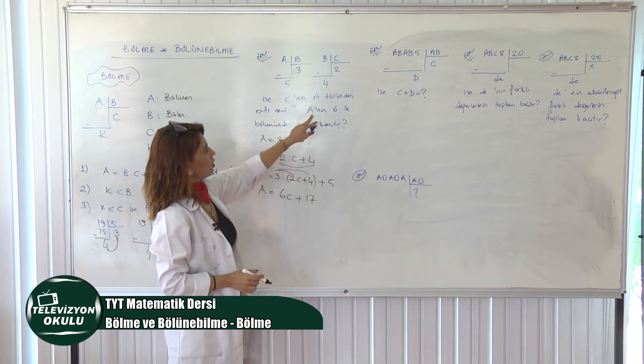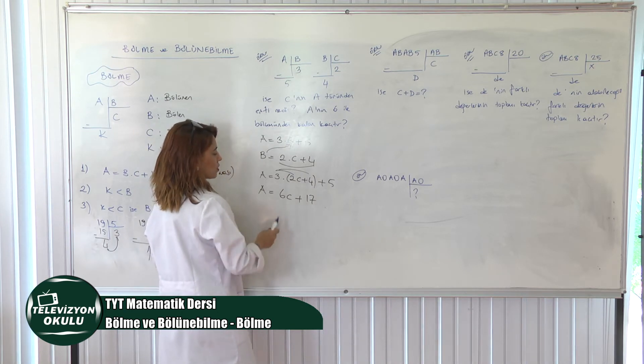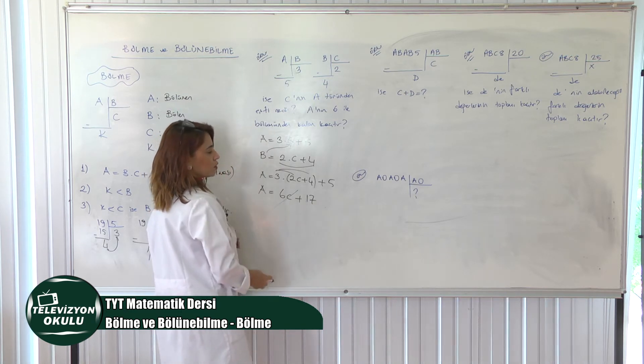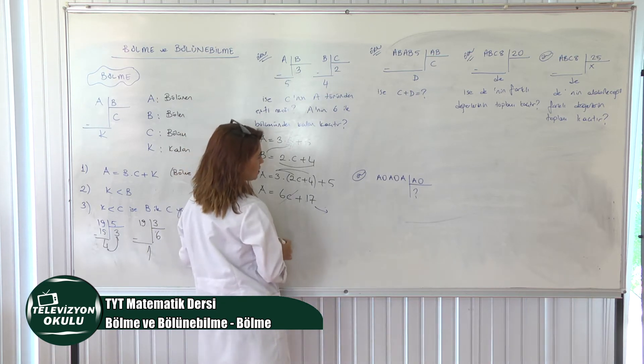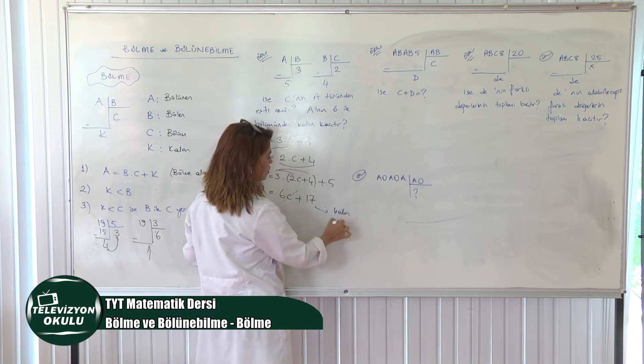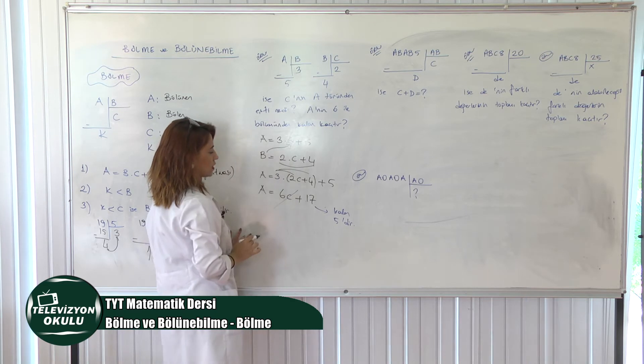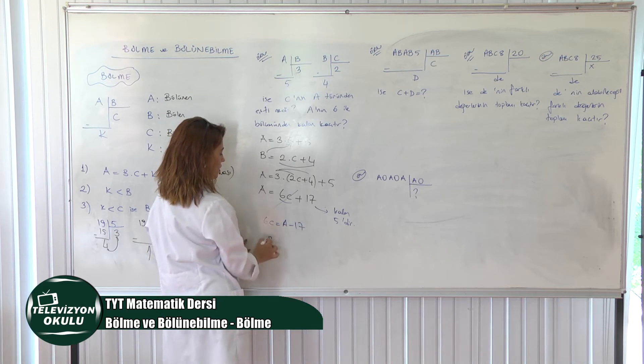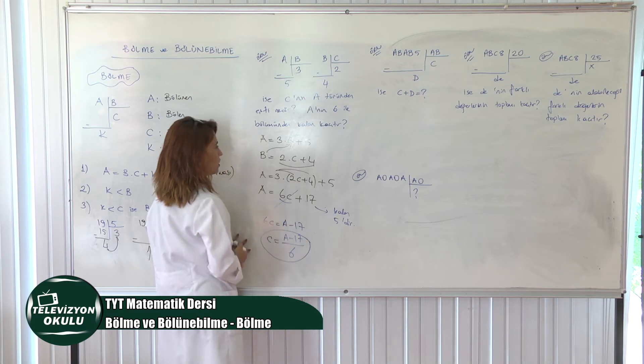Peki şu ikinci şıkkı önce bir bakalım. A'nın 6 ile bölümünden kalan nedir diyor. A sayısı 6C artı 17'dir. 6 ile böldüğümüz zaman ne olur? Burası zaten tam bölünür sıfırlanır. 17 kalır bir tek. 17'yi de 6'ya bölerim o zaman. 17'nin 6 ile bölümünden kalan nedir arkadaşlar? 5'tir diyoruz. Yani bu ifade 6'ya bölündüğünde kalan neymiş? 5'miş dedik. Bu ikinci şıkkın cevabı. İlk şıkta C'nin A türünden eşitliği nedir deniliyordu. C'yi yalnız bırakacaktık. 6C eşittir diyoruz. A-17'ye yani C eşittir. A-17 bölü 6'ya. C'nin A türünden eşitliği de budur.